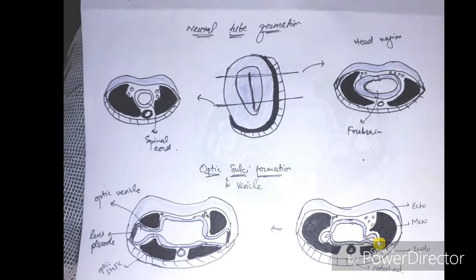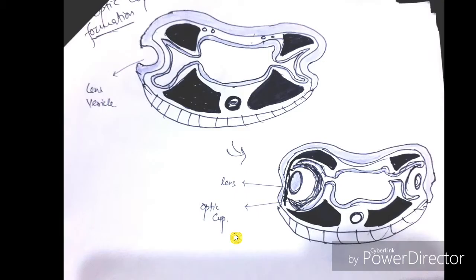The optic sulci appear and move laterally until they reach the surface ectoderm. Once they reach the surface ectoderm, they influence it to thicken and form the lens placode, as we studied in the previous video. Then invagination occurs, finally forming the lens. The development of the lens is covered in the previous video.